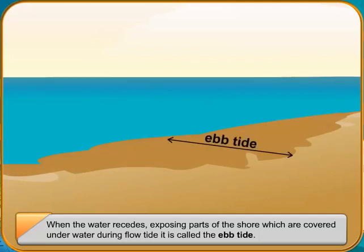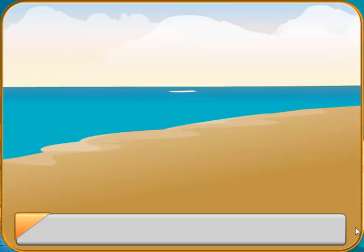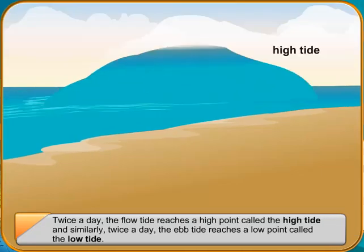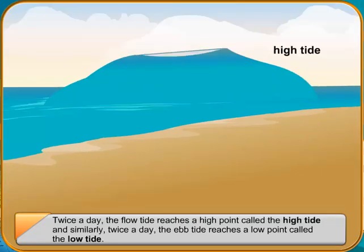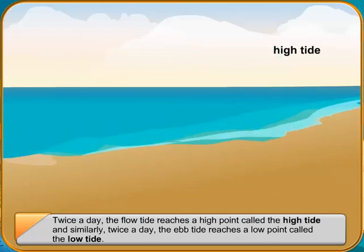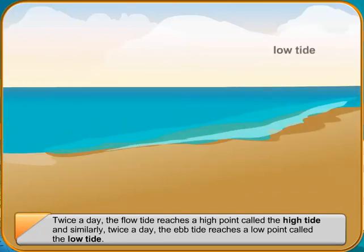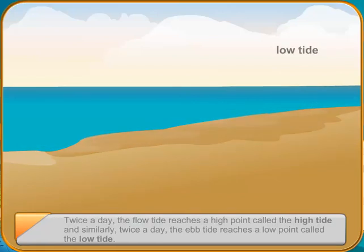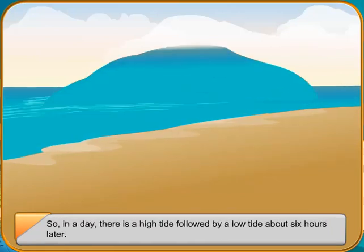When the sun, the earth and the moon are in the same line, the highest high and low tides occur because of the combined gravitational pull of the sun and the moon on the earth. These are called spring tides. They occur every full moon and new moon days.